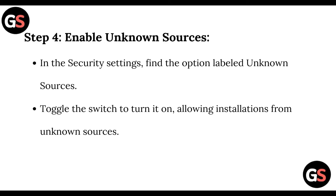Step 4: Enable Unknown Sources. In the Security settings, find the option labeled Unknown Sources and toggle the switch to turn on allowing installations from unknown sources.